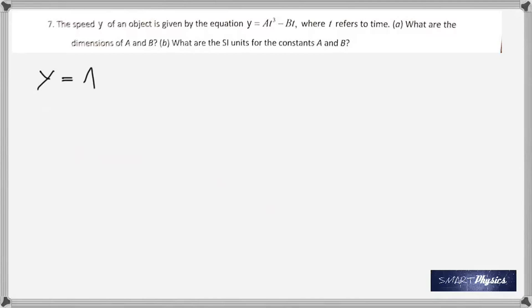And, finally, the speed of an object is given by the quantity or the equation, v is A T cube minus B T where T refers to time. What are the dimensions of A and B? And, what are the SI units for the constants A and B? Now, this question is about dimensions and knowing that the dimension of the term here should be the same as the dimension of the two terms on the right hand side. So, the dimension of velocity and that of A T cube must be equal, and also that of B T. So, that's the idea. And so do the units. The units and the dimensions must be the same.